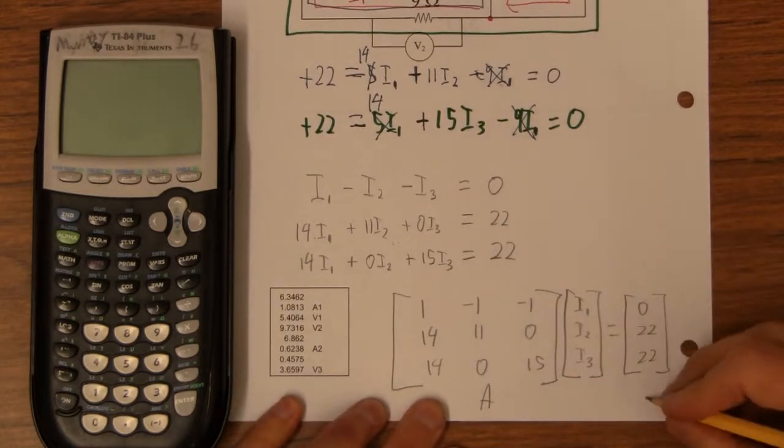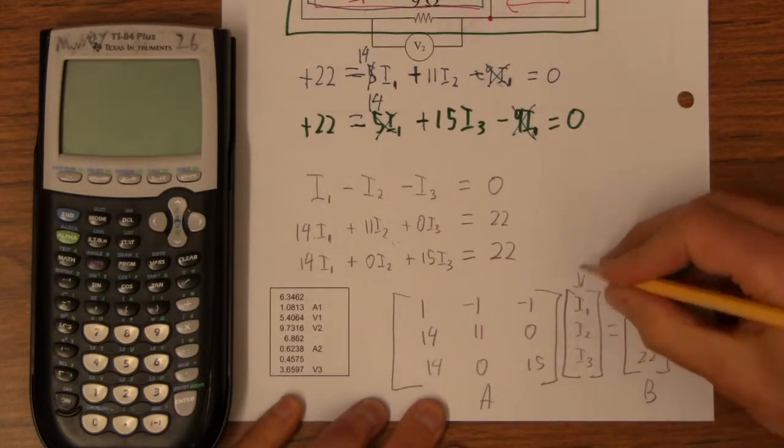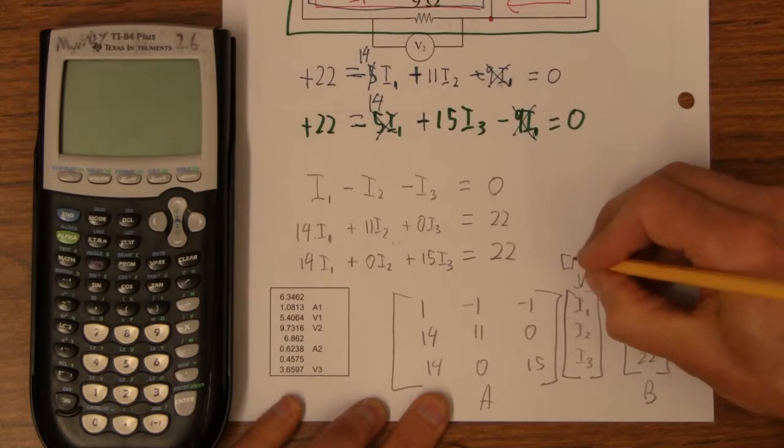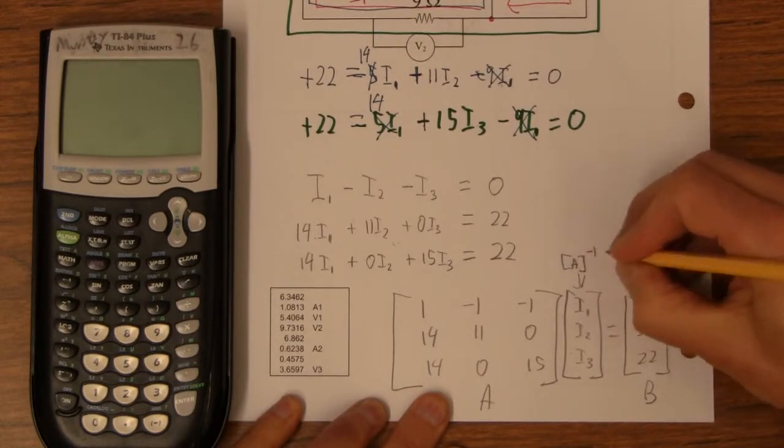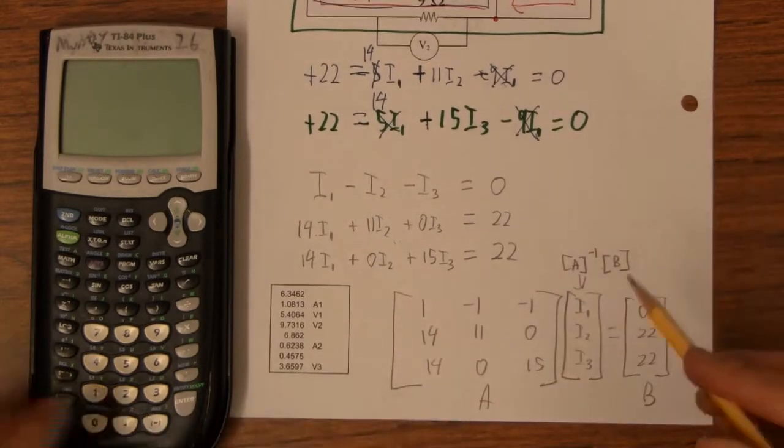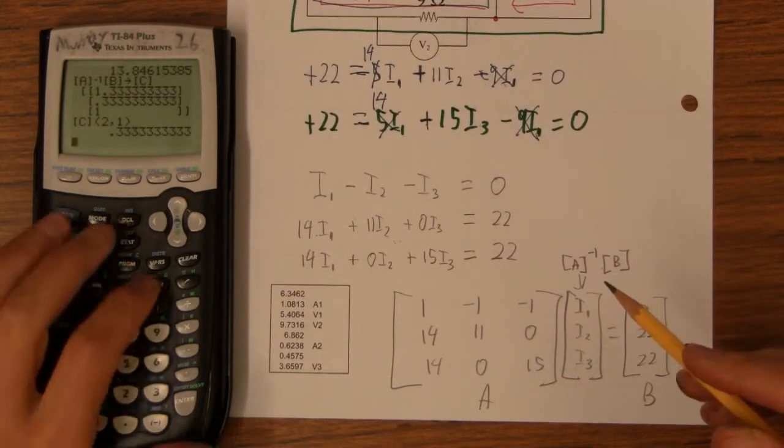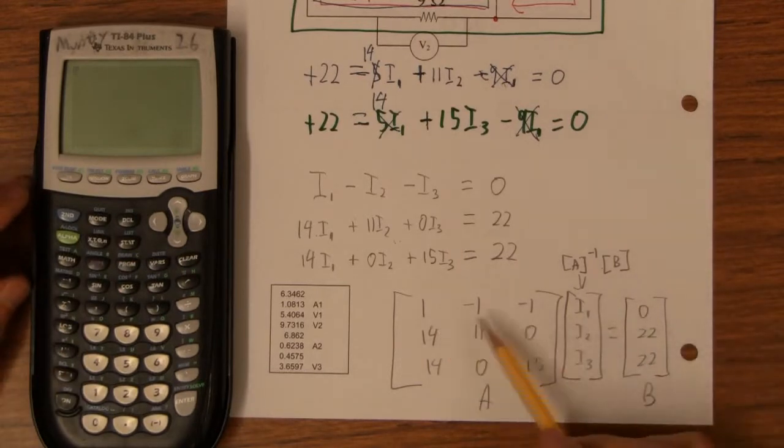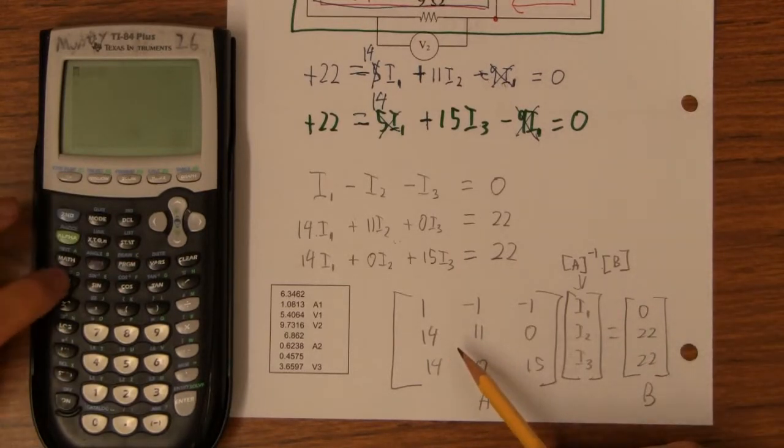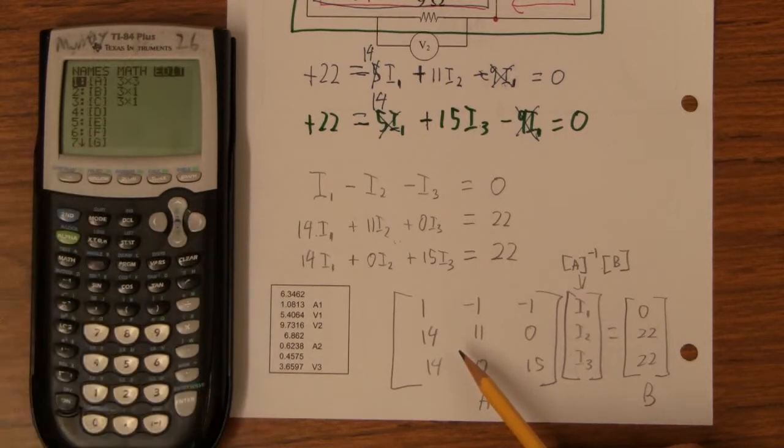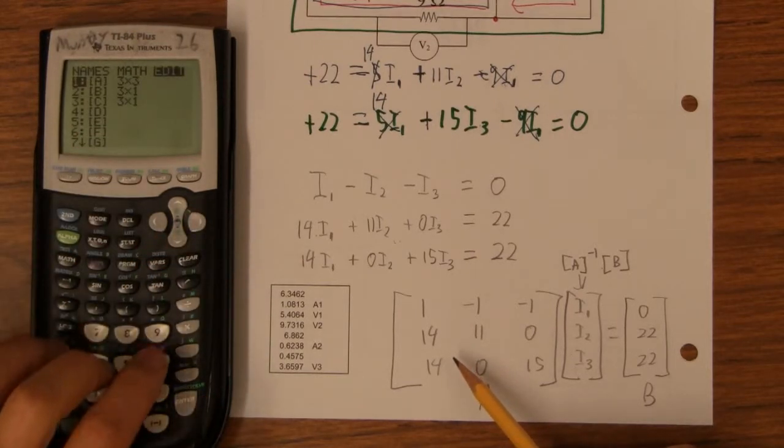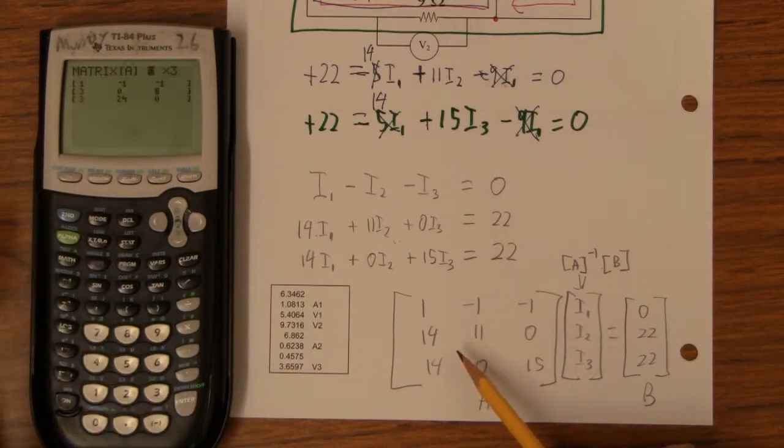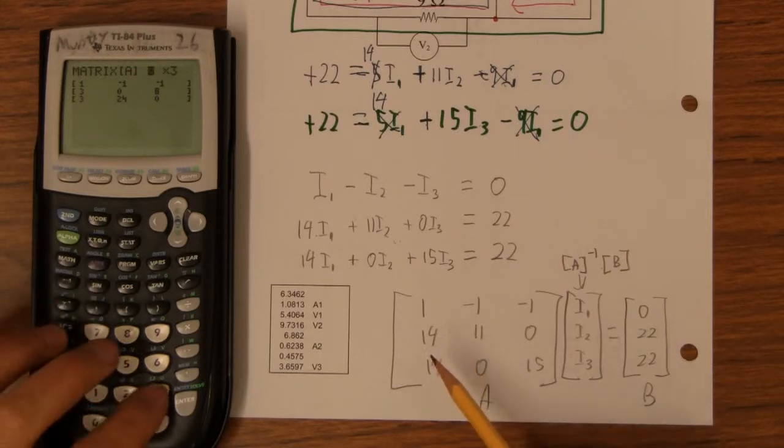If this is matrix A, we're going to make this one B, and the answer matrix will be A inverse B. That would be hard to do except our calculator can do this for us. First thing is to type this matrix in, so let's go second matrix, over to edit, and let's do A.